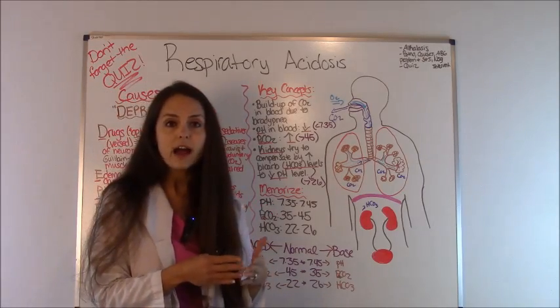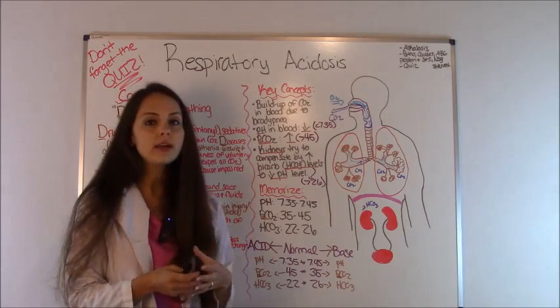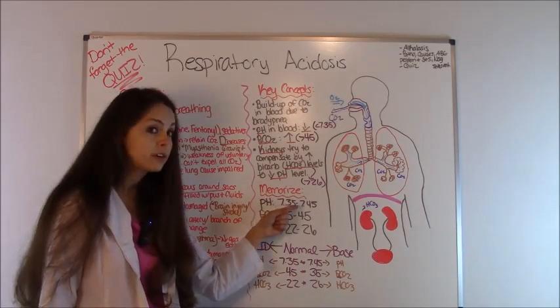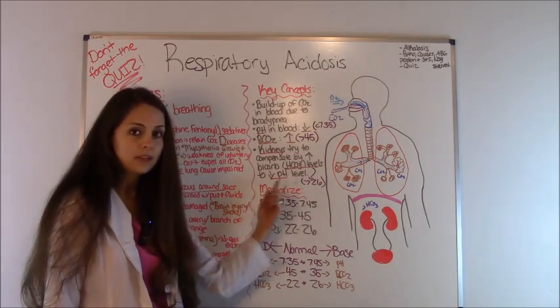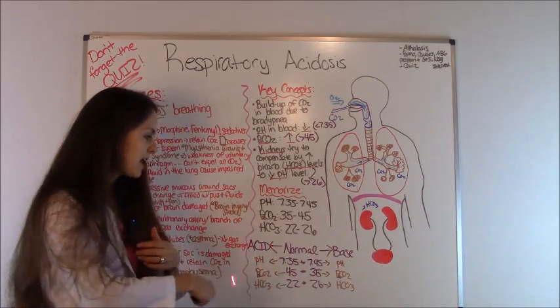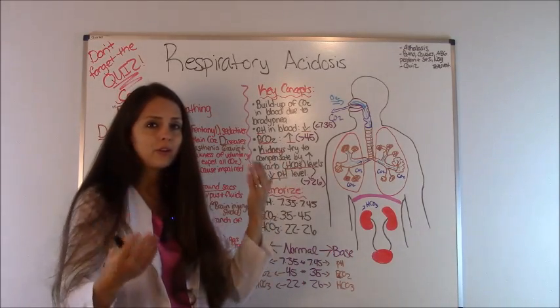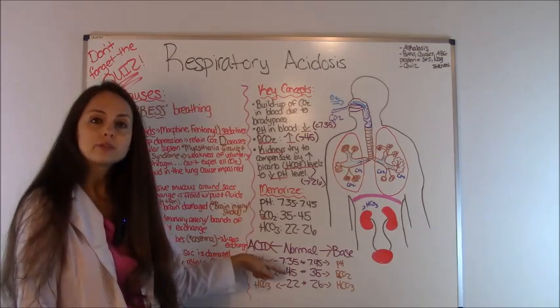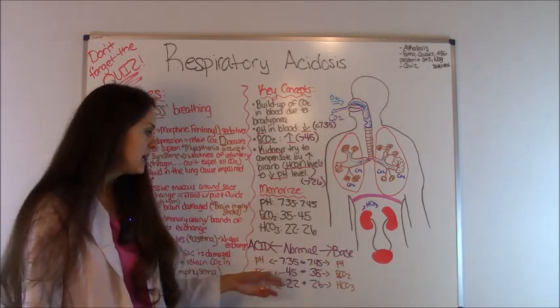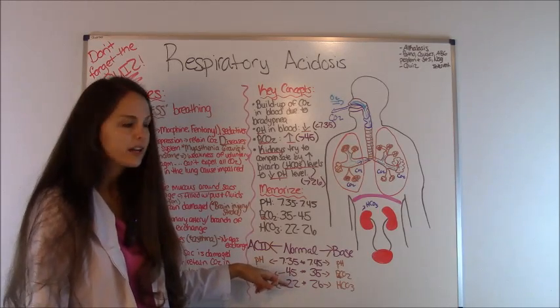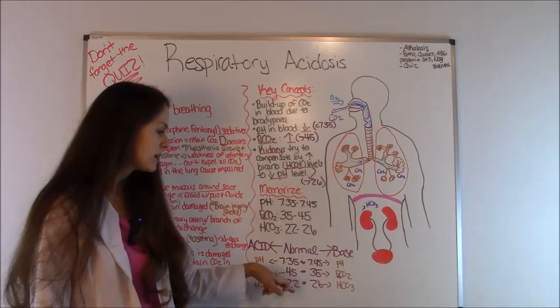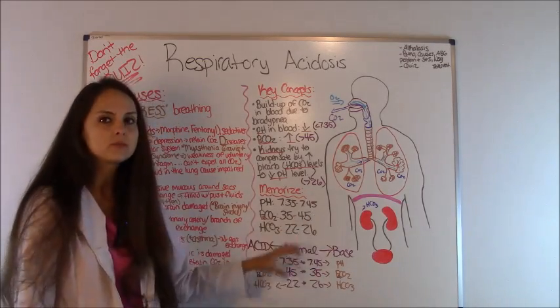A normal pH level is 7.35 to 7.45. A normal PaCO2 level, your carbon dioxide level, is 35 to 45. How I remember these two: remember the fives at the end? 7.35 to 7.45, and then PaCO2 is 35 to 45. You see the three and the five and the four and the five. Then the HCO3, which is your bicarb, the normal is 22 to 26. I have this little chart that helps me remember if it's an acid or not an acid. For pH, anything less than 7.35 is an acid. Anything greater than 7.45 is a base, alkalotic. PCO2 is the opposite. The high number, anything greater than 45 is acidotic, and anything less than 35 is alkalotic. Bicarb, anything less than 22 is acidotic, and anything greater than 26 is alkalotic.